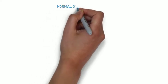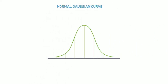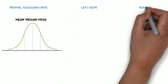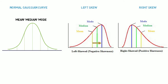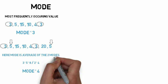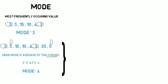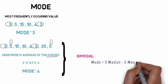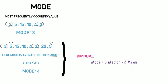In a normal Gaussian curve, mean equals median equals mode. You should note there is something called left skew and right skew. In a left skew diagram, the mode has shifted more to the positive side, so mode is greater than median, which is greater than mean. In a right skew diagram, the mean has shifted more to the positive side, so mean is greater than median, which is greater than mode. When 2 modes are present, it is called a bimodal pattern, and the formula used is: Mode equals 3 times median minus 2 times mean.